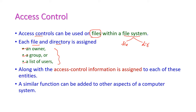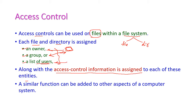Along with these entities, access control information is also assigned. That means the owner can perform certain operations on the file, or a group of people can perform operations such as read, write, or delete. The list of users can also access the file, and how they access it is given in the access control information for all those entities.